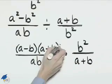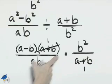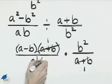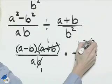And now we can cross divide. a plus b divides away. b here divides one of the b's in this numerator. This b becomes one and this b becomes b to the first power.